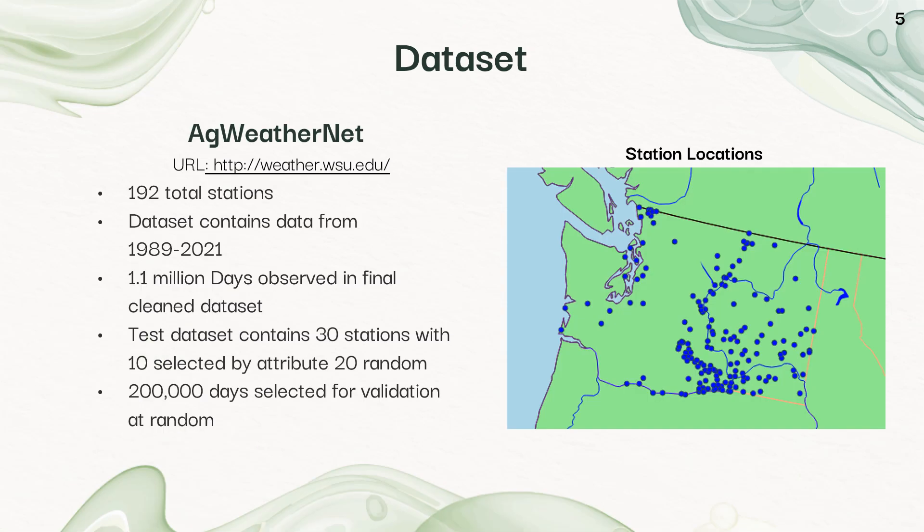The data set I used for this modeling project was WeatherNet. I included the URL below. It's a great data source. There are 192 total stations across Washington, and it's quite extensive, dating back to 1989, although most stations are newer. The figure on the right is all the station locations I used in blue dots. There was about 1.1 million days that I examined.